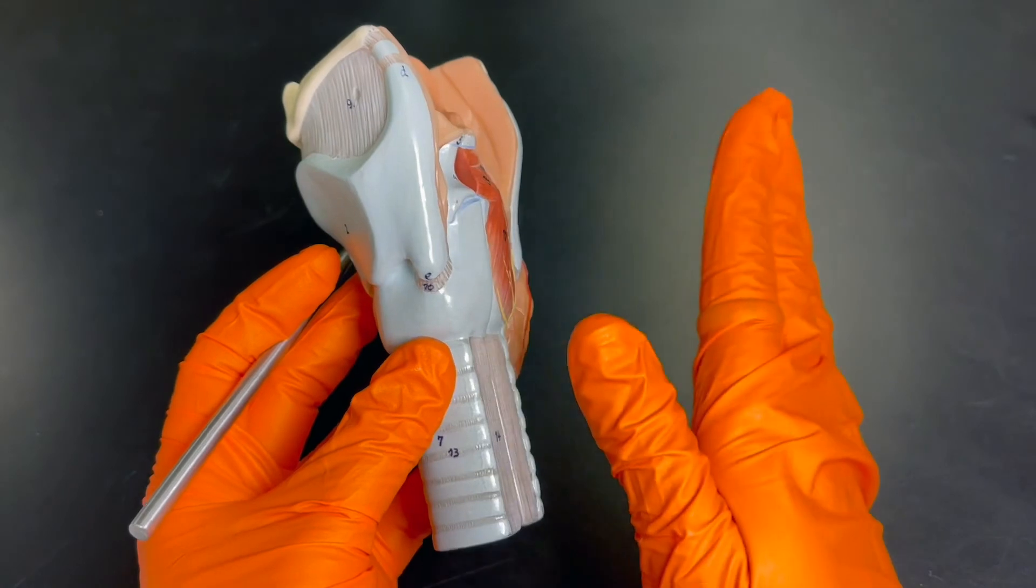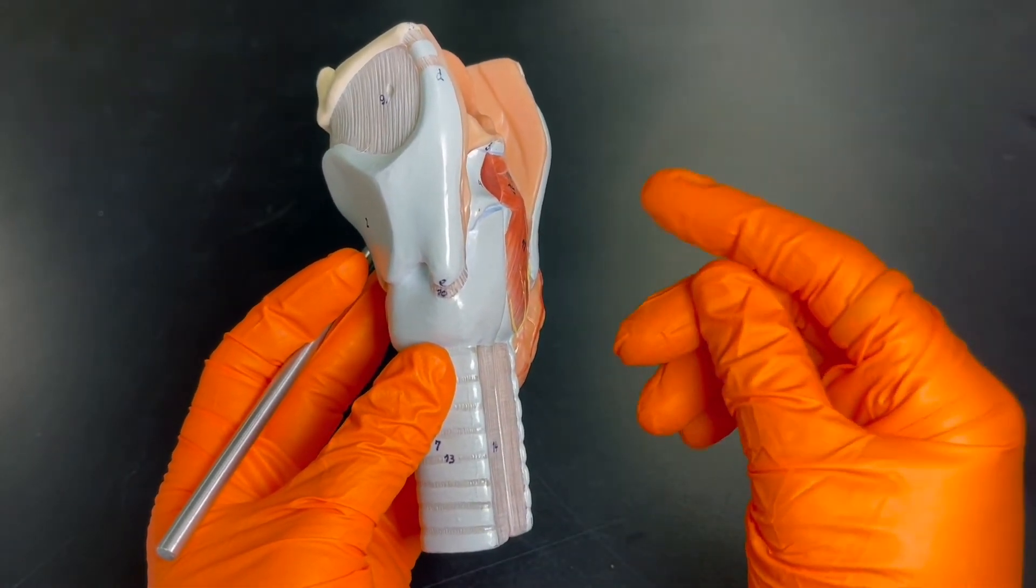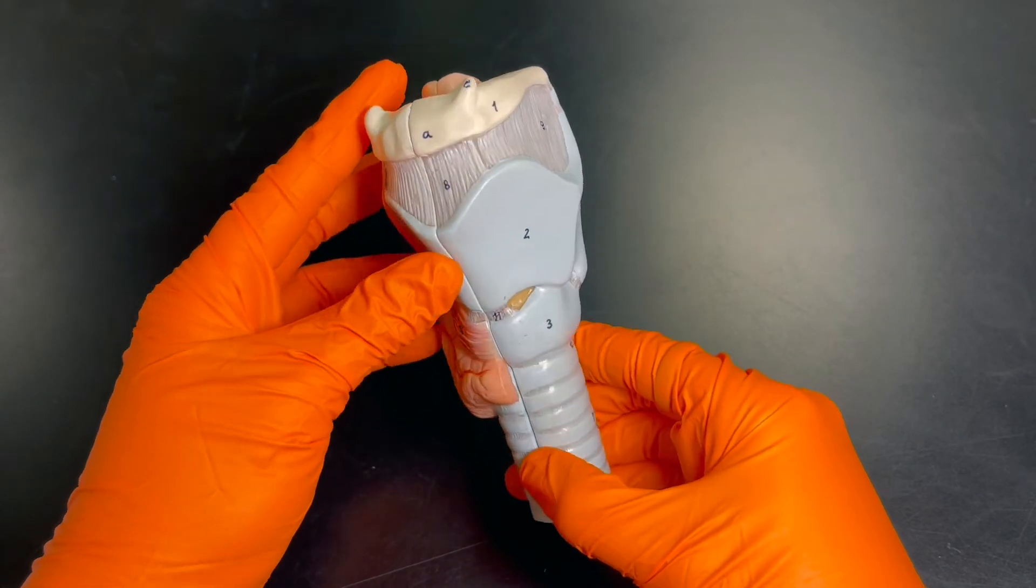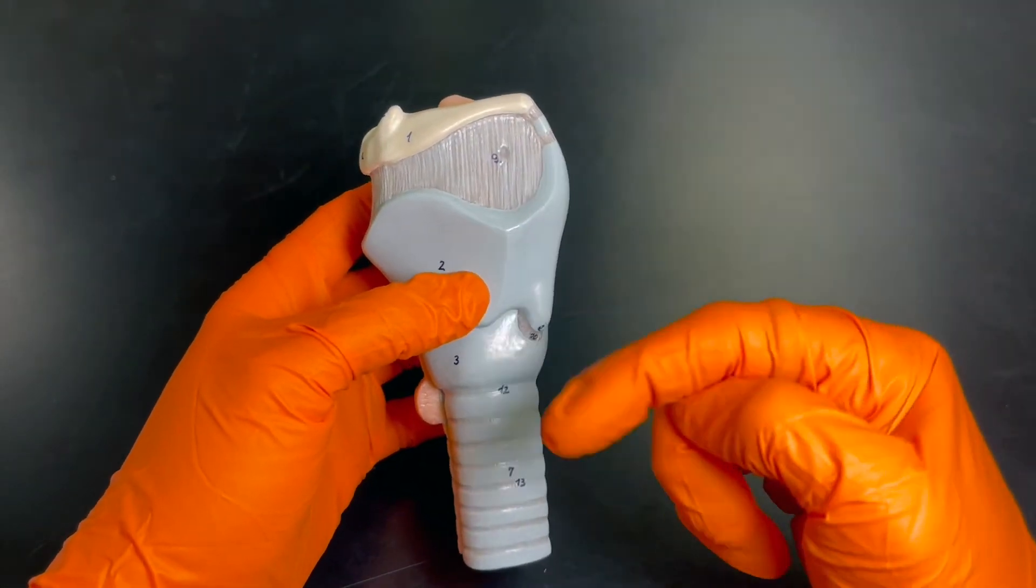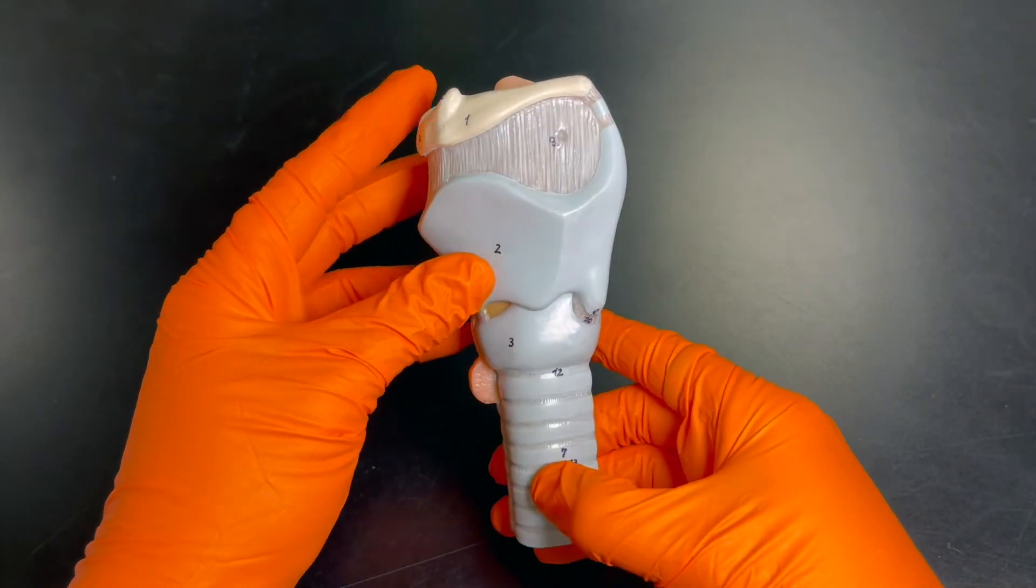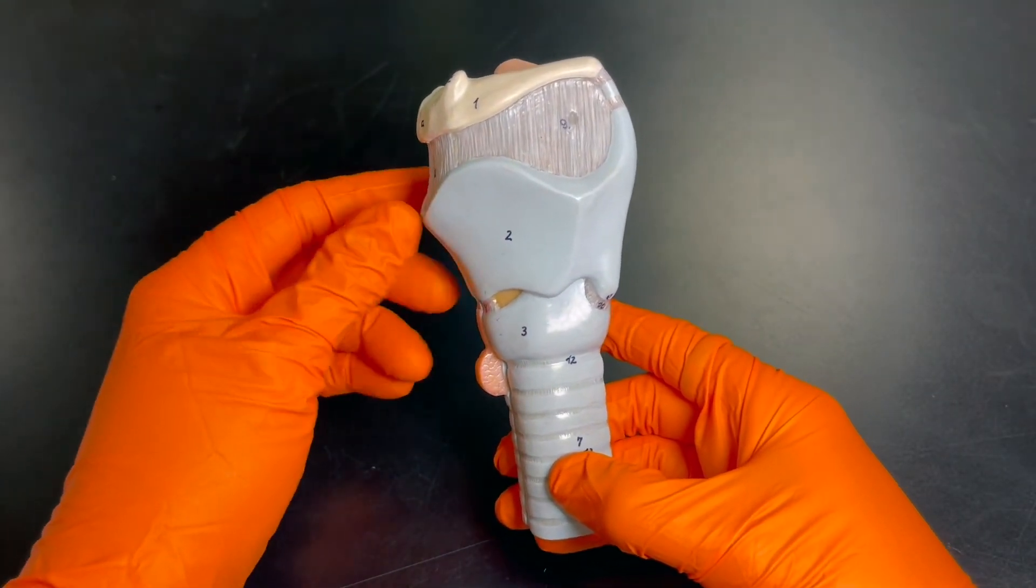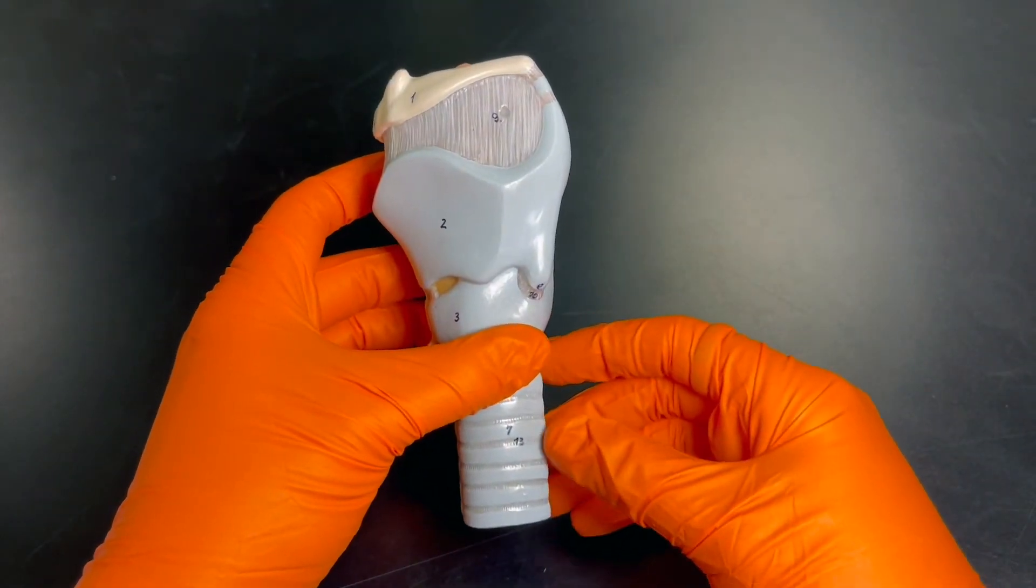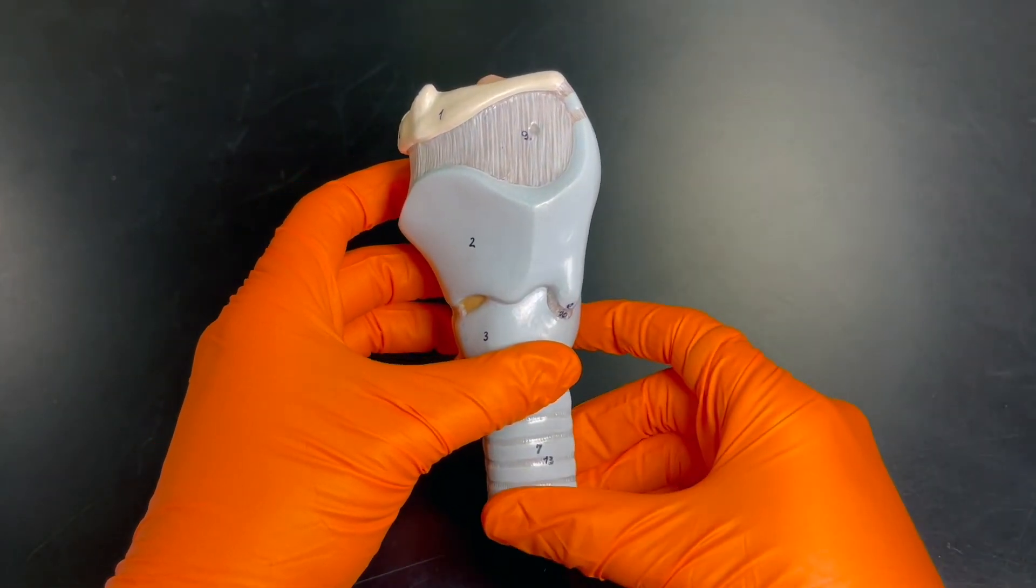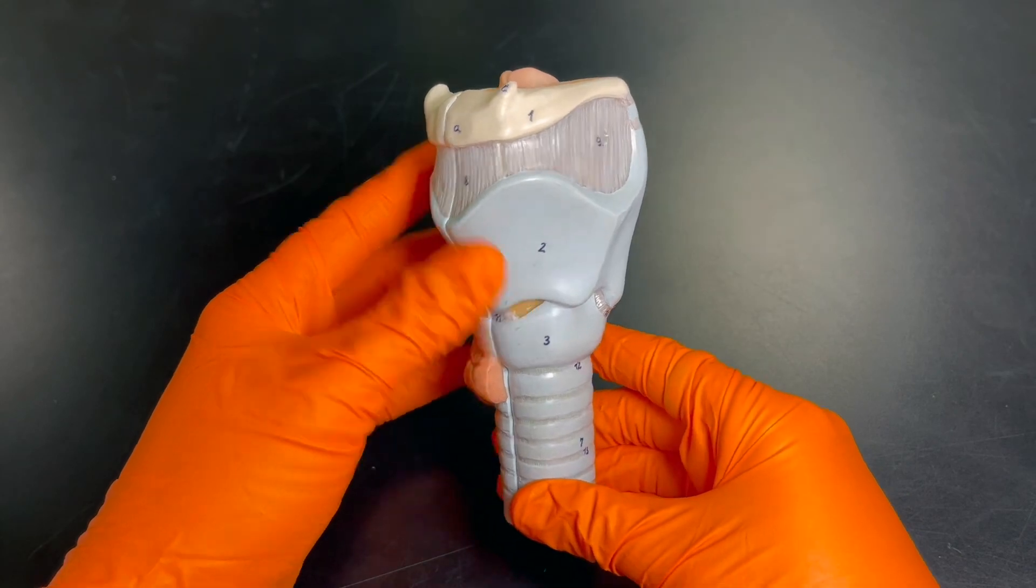Well, that wraps up the lower respiratory tract. I hope this video helped you understand the basic anatomical parts of the larynx and the trachea. Let me know in the comments if you have any questions, and make sure you hit that bell icon so that you don't miss any of my new videos. Have a great day.